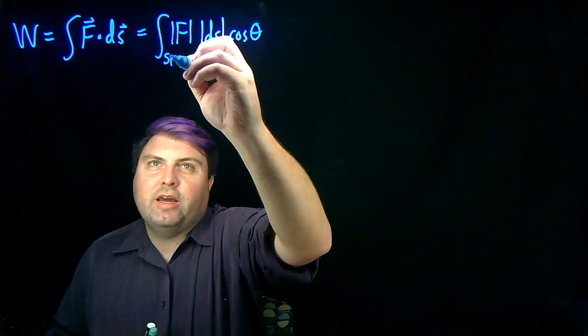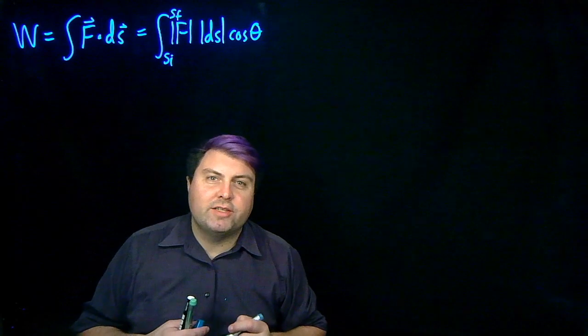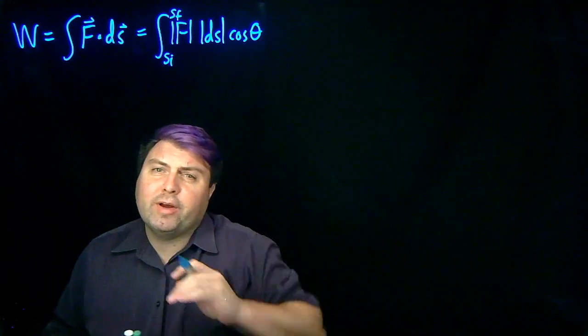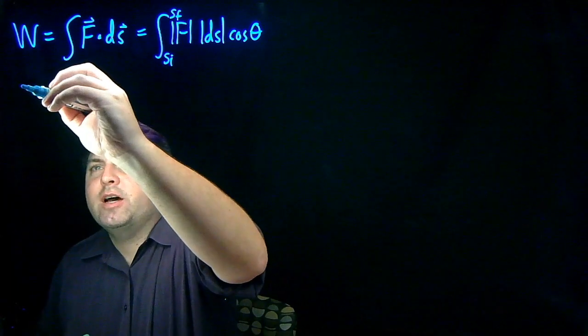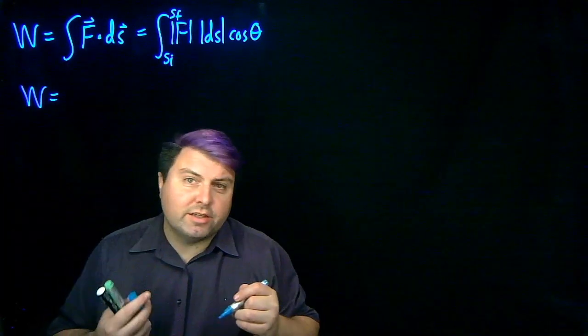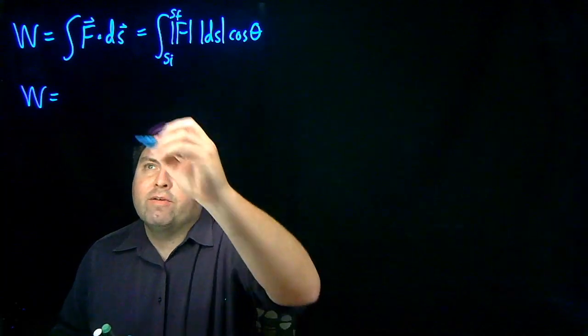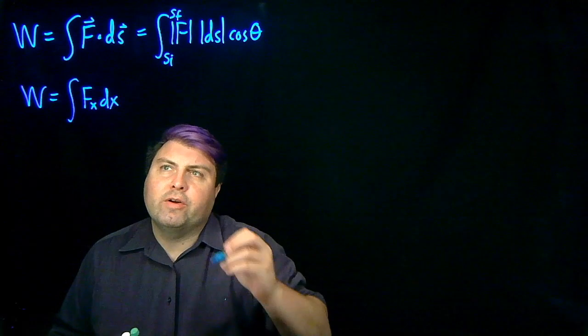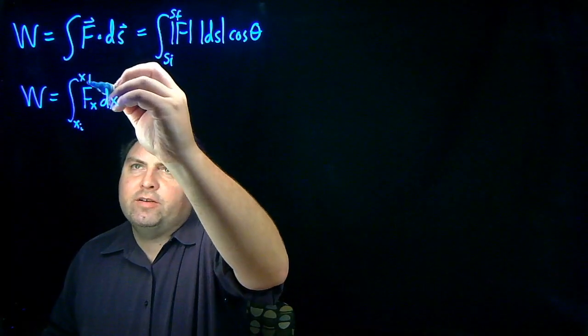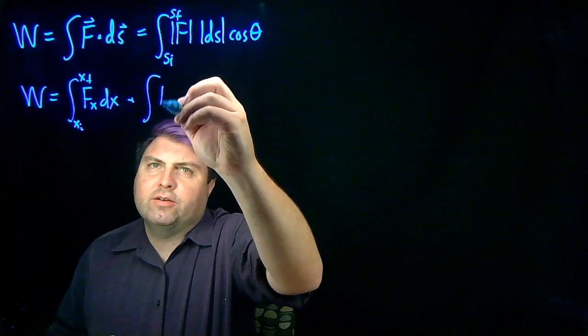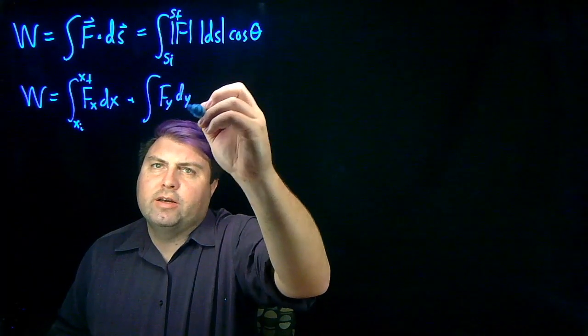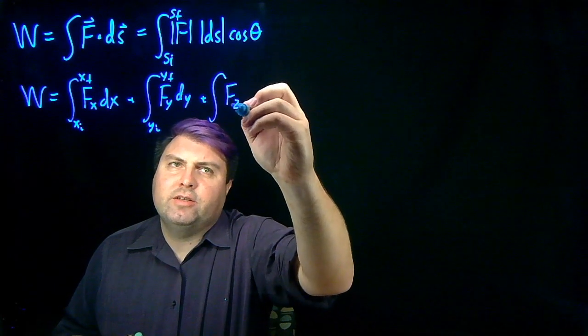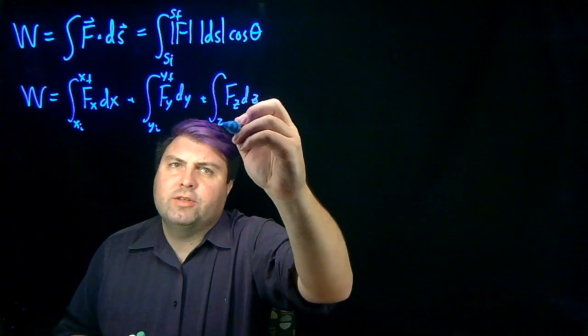And since it's a physics integral, we always have to have it be a definite integral. I want to introduce another way of thinking about this dot product, and the dot product is really just representing, at least in Cartesian coordinates, a summation of all of the different parallel directions. So it would be the integral of fx dx from x initial to x final plus the integral of fy dy from y initial to y final plus the integral of fz dz from z initial to z final.